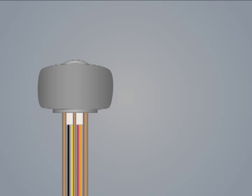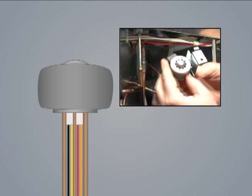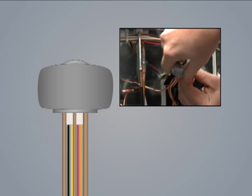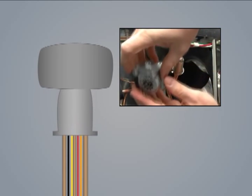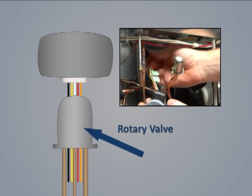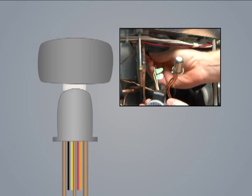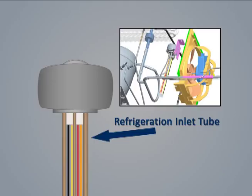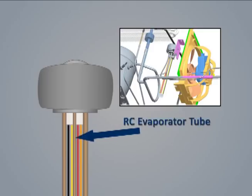Three-way rotary control valve: refrigerant flow is controlled by an electronically controlled refrigerant valve. The valve is comprised of two parts — the magnetic operating coil and the hermetically sealed rotary valve. The refrigeration inlet tube is connected to the outlet of the filter dryer and is the largest diameter of the three tubes connected to the valve body. All three tubes are different diameters to ensure proper installation. One outlet tube is connected to the cap tube of the RC evaporator, and the remaining tube is connected to the cap tube of the FC evaporator.